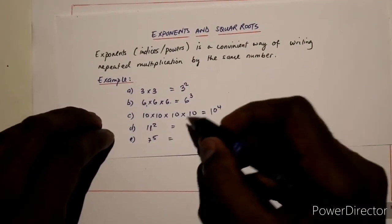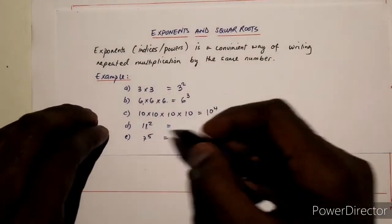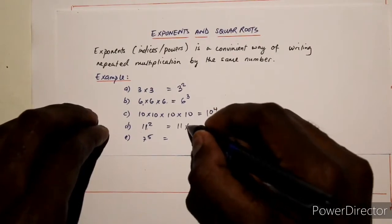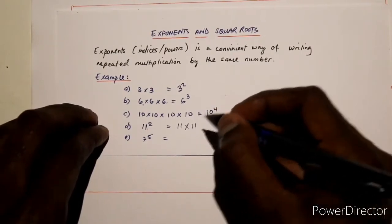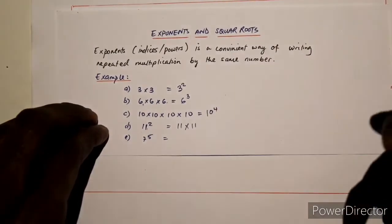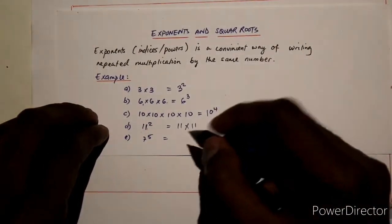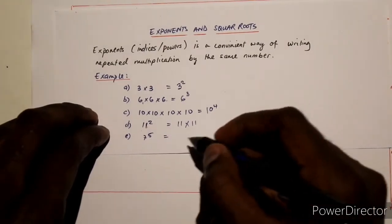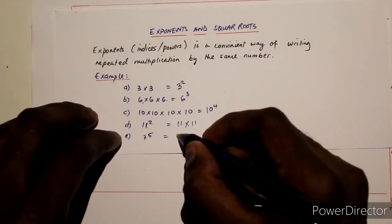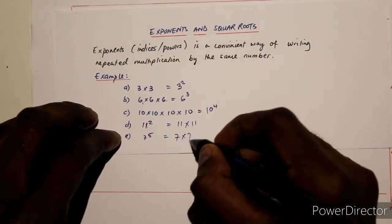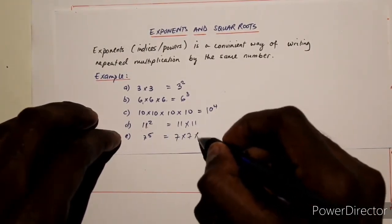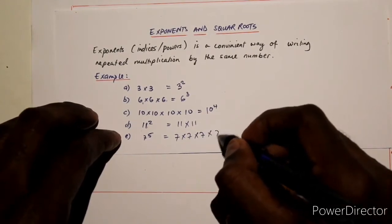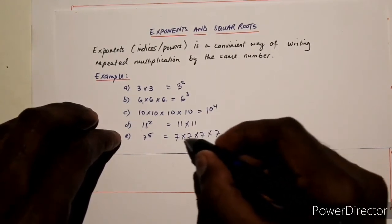Vice versa, if we have 11 to the power of 2, it is simply the same as 11 times 11 — 11 multiplied by itself 2 times. If we have 7 to the power of 5, then we have 7 times 7 times 7 times 7 times 7.